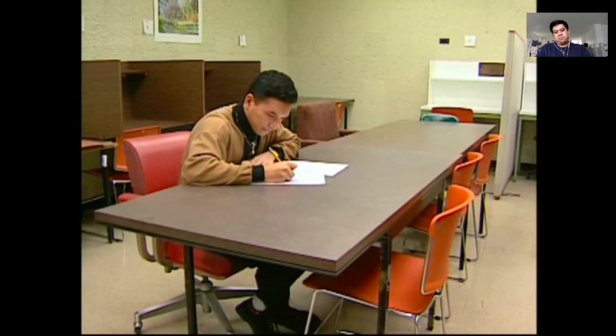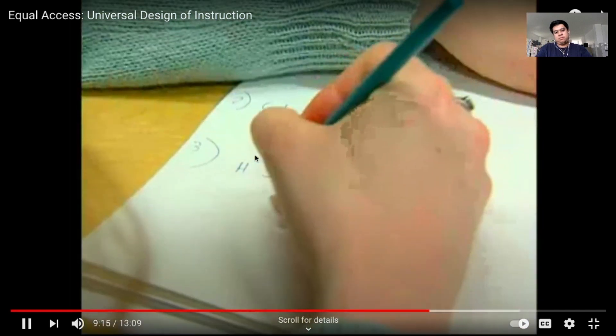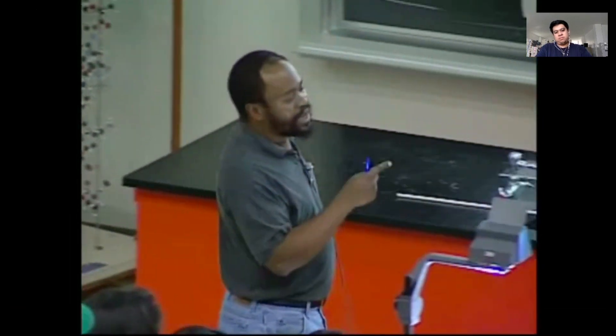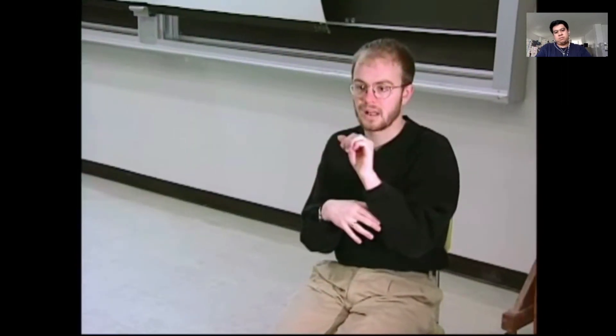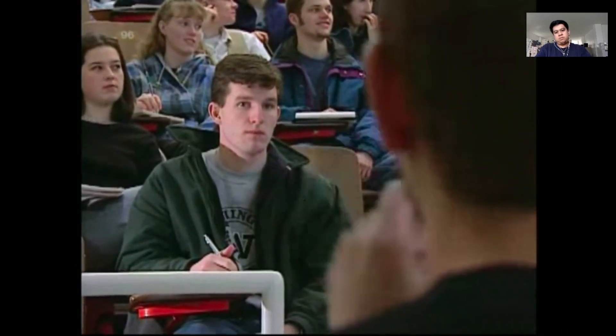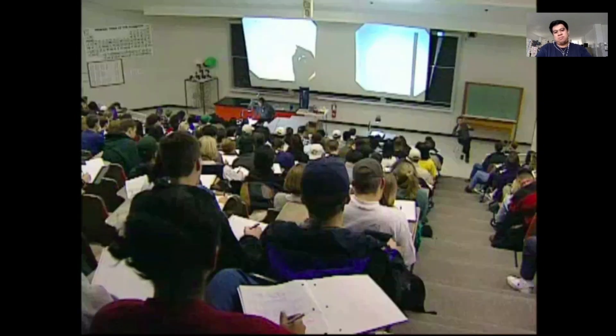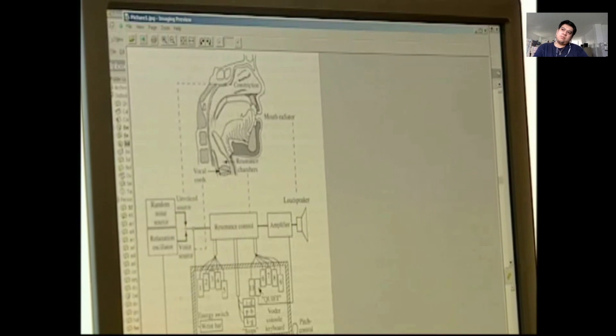Of course, there will still be times when you need to provide accommodations such as a sign language interpreter for a student who is deaf — but applying universal design will minimize the need for these accommodations. Richard notes that very generic things work most of the time, such as making lectures available in electronic form. Universal design is measured on a continuum — a first step could be getting course materials on a website; the ideal is to make those notes universally accessible.